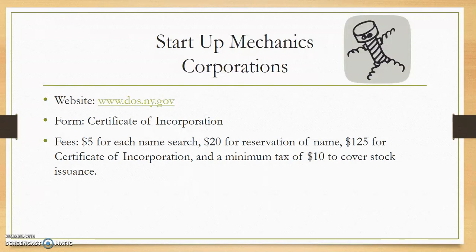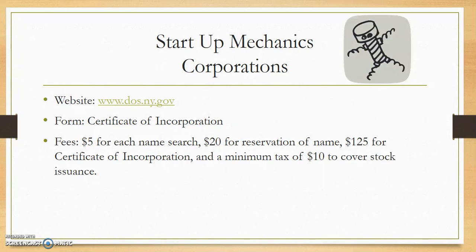How do you form a corporation? You go to the same website as the LLC, www.dos.ny.gov. However, the form that you look for is the Certificate of Incorporation. The fees include $5 for each name search, $20 for the reservation of the name, $125 for the Certificate of Incorporation, and a minimum tax of $10 to cover stock issuance. There are other things you must do when you have a corporation, such as having a Board of Directors, and there are different ways in which you can pay your taxes, so talk to your accountant to make sure you're being covered properly.